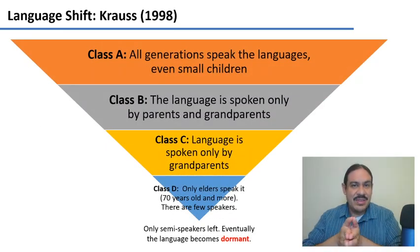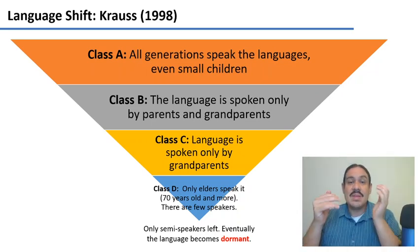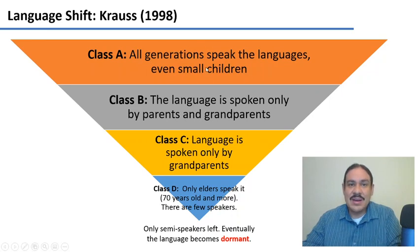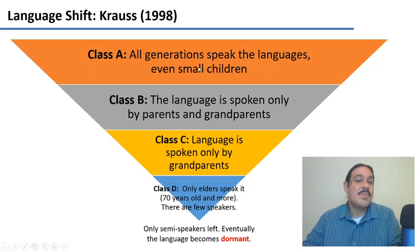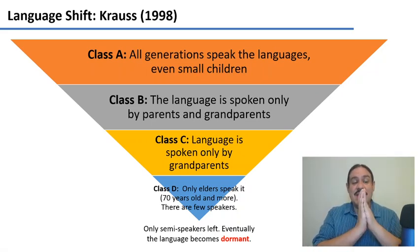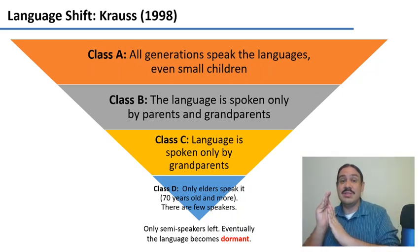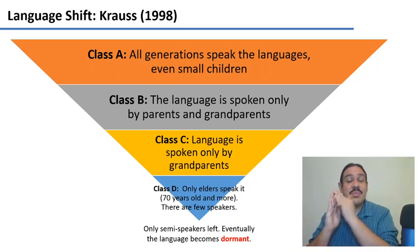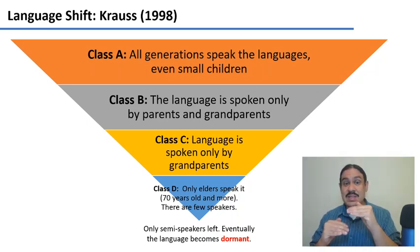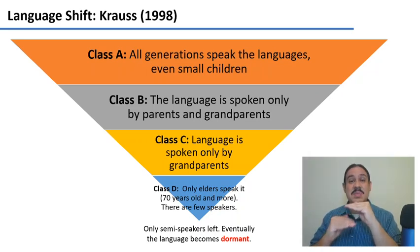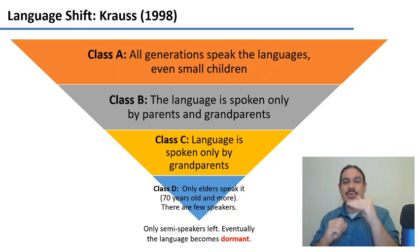A language like English is one where every generation speaks the language, including small children. However, if a language is discriminated against, it will recede from technology, jokes, culture, government, the market, and family use — until there is a generation of parents that will not use it with their children, for all the structural conditions discussed in the previous video, because they want to spare them from the pain of being discriminated against. So the children will only speak the majority language, and only the parents and grandparents will speak the indigenous language.